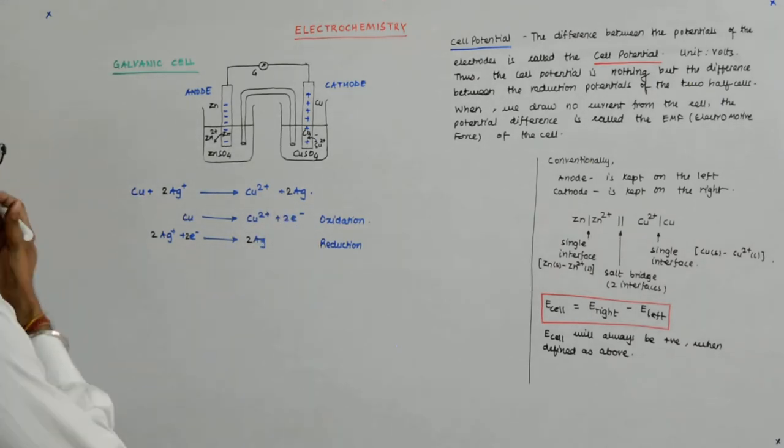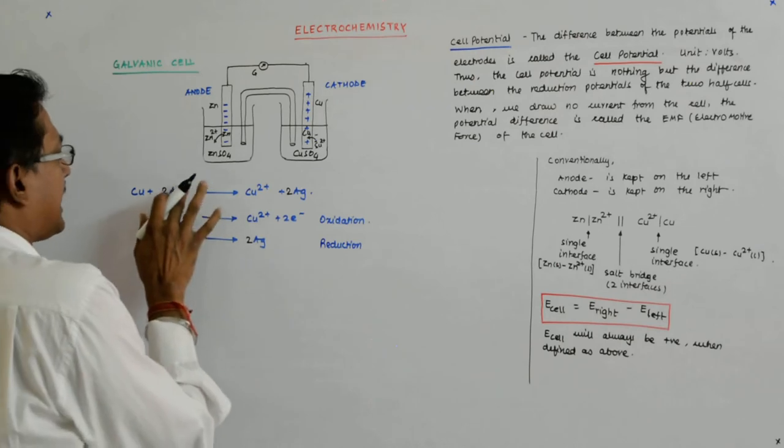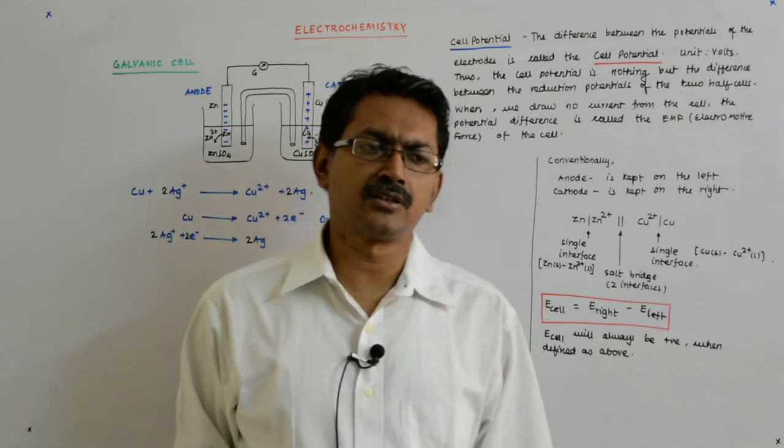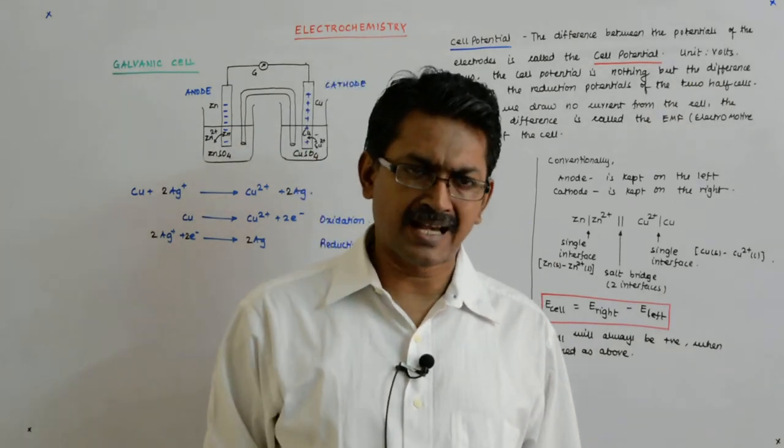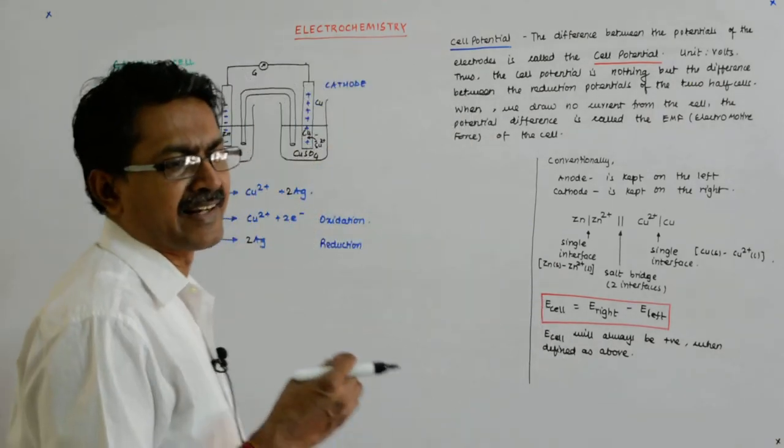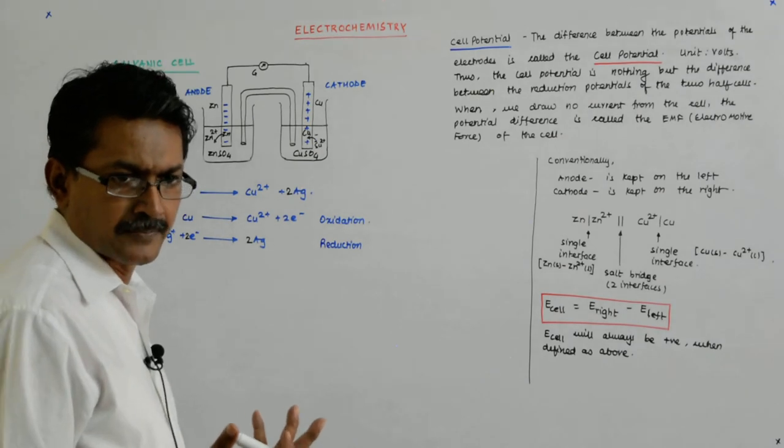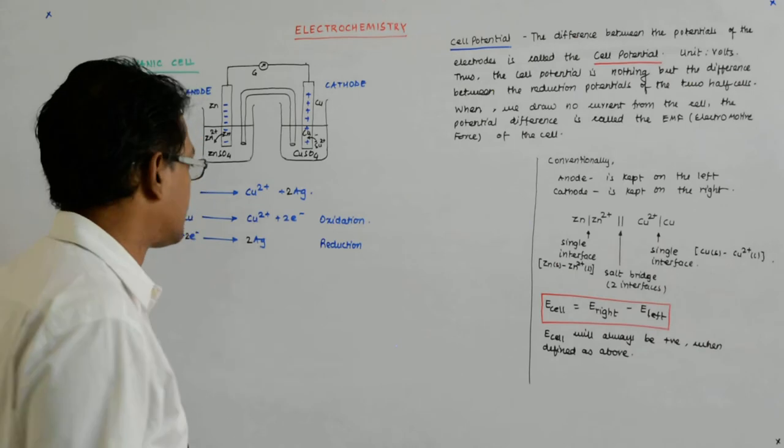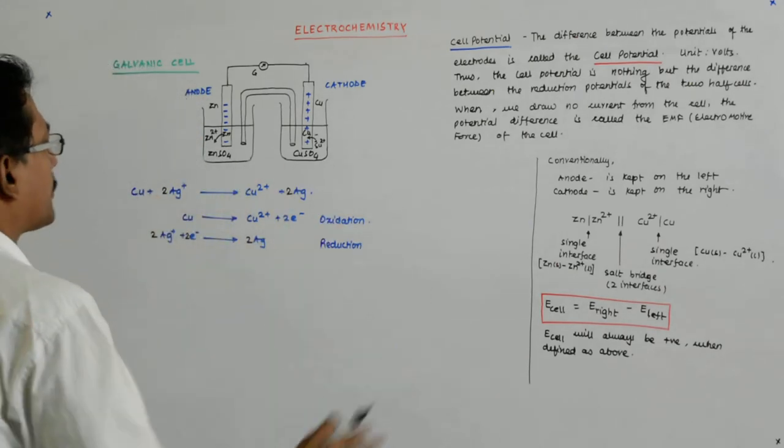Even otherwise you could have thought it this way: there was 2 positive charge here and 1 single positive charge. The equation without being balanced seems to be generating a charge which we are not capable of. We know that the charges are conserved.